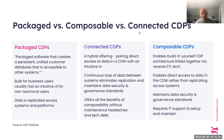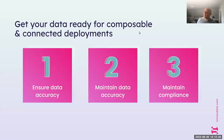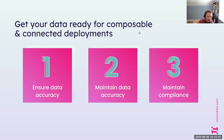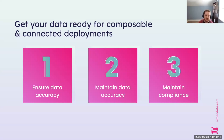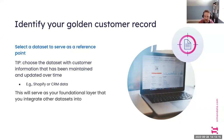Folks choosing the connected CDP route tend to have a mature data warehouse — they've centralized on Snowflake and want any data element flowing in to be immediately available for marketers to act on. Now let's talk about how to get your data in a mature state for either composable or connected architecture. There are three high-level steps: ensuring data accuracy, maintaining that accuracy, and staying compliant with data privacy regulations.